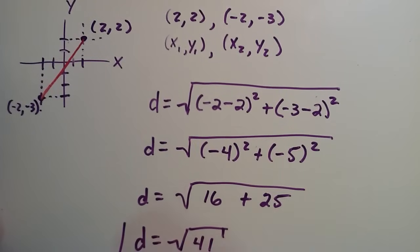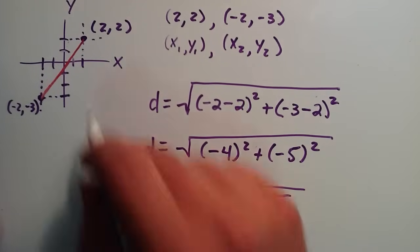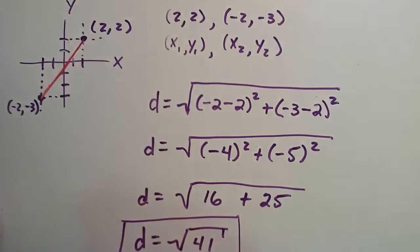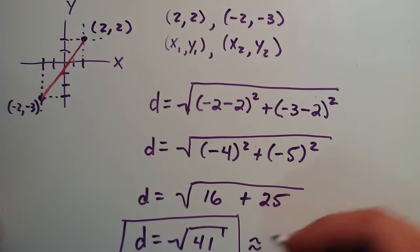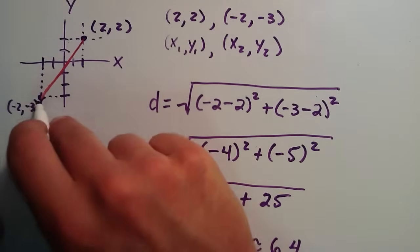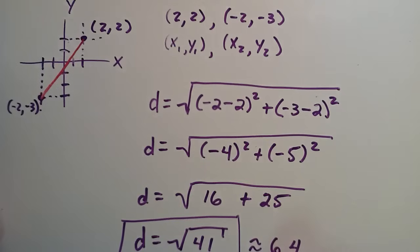So square root of 41 is the length of this line. And that is approximately equal to 6.4. So the distance between these two points is about 6.4.